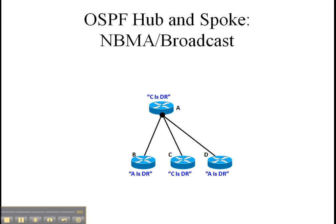By default, if you don't do anything and you are running OSPF in a frame relay or ATM environment, this is what you're going to see. There is no predicting who is going to be the designated router, or DR for short.